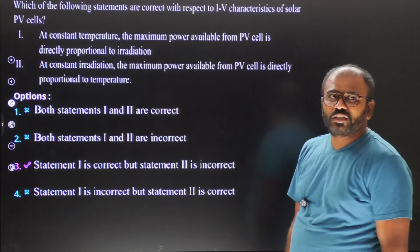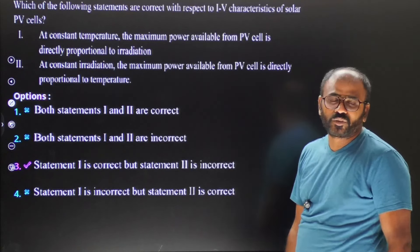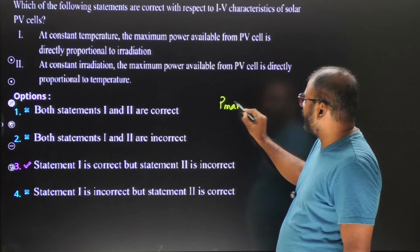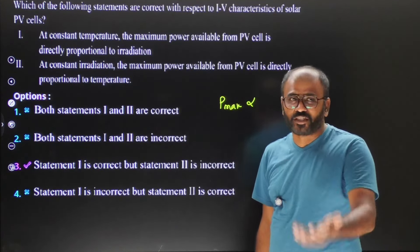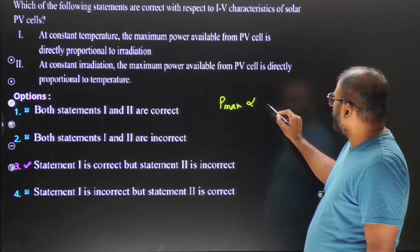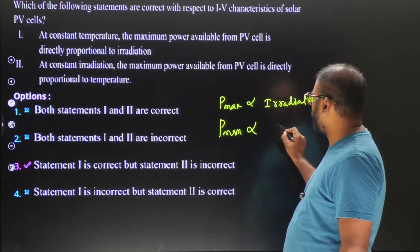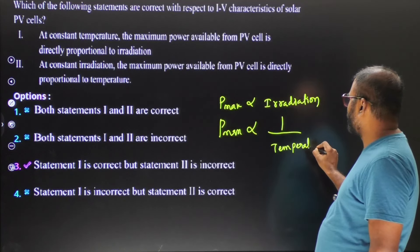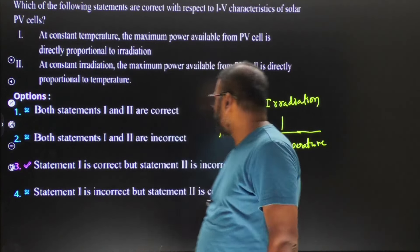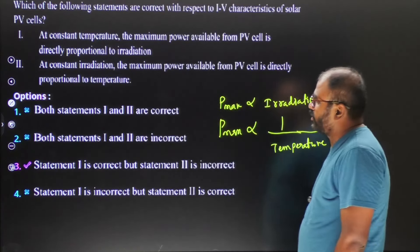Question fifteen is from PV cells. In a PV cell, irradiation and power output are directly proportional, while power output and temperature are inversely proportional — because as temperature increases, resistance increases, losses increase, and efficiency decreases. The maximum power output (Pmax) is directly proportional to irradiation (in W/m²). Statement two — that at constant irradiation, Pmax is directly proportional to temperature — is the incorrect statement.